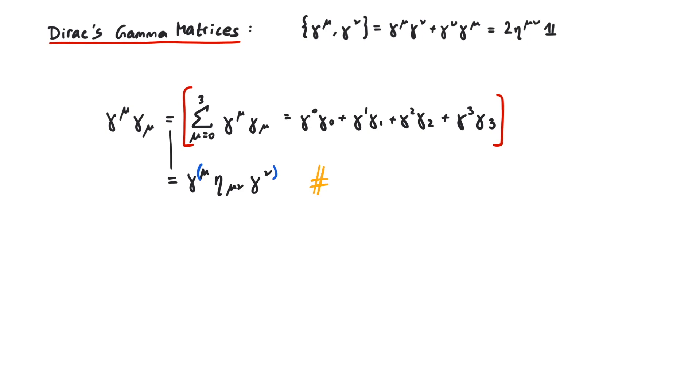The symmetric part of a tensor is given by the sum of itself over and over every time with a different index permutation. For a general tensor a mu nu, this is a mu nu plus a nu mu. And since there are now two of them, we have to compensate that by dividing by two.